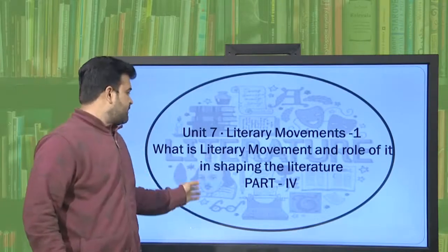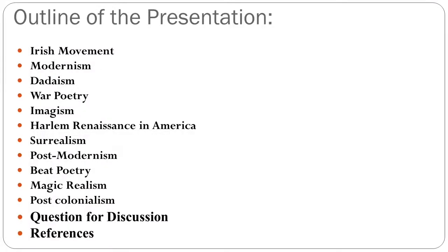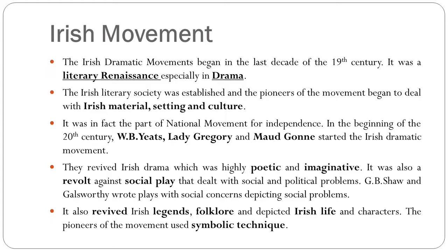What is a literary movement and its role in shaping literature? Today we are going to talk about certain literary movements as part of the history of English literature. We are going to talk about Irish Movement, Modernism, Dadaism, War Poetry, Imagism, Harlem Renaissance in America, Surrealism, Postmodernism, Beat Poetry, Magic Realism, and Postcolonialism, along with questions for discussion and references.